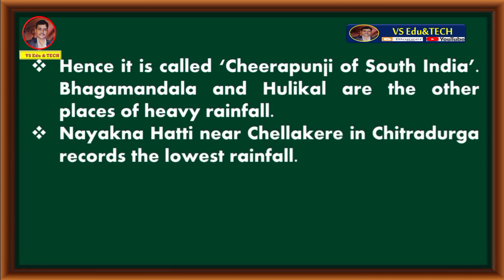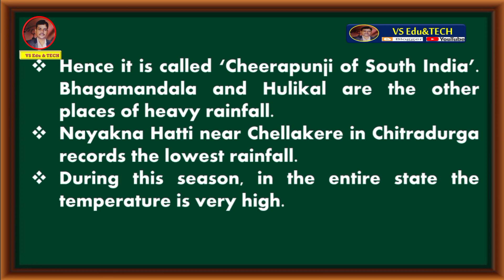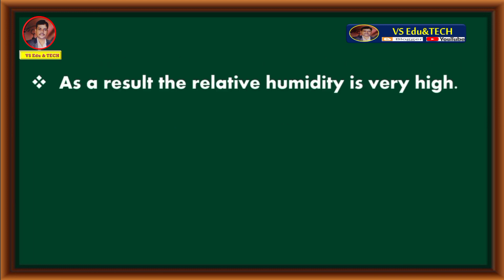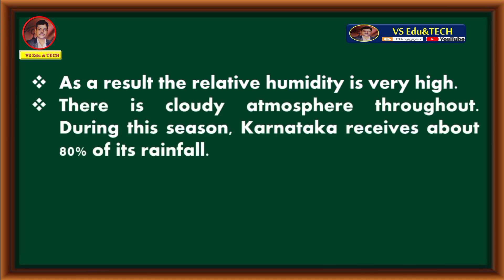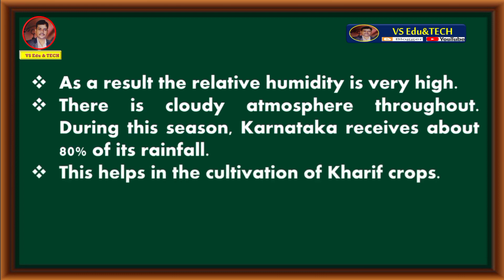Nayakanatti near Chalakere in Chitradurga records the lowest rainfall. During the rainy season, the temperature in the entire state is very high, and as a result, the relative humidity is also very high. There is a cloudy atmosphere throughout. During this season, Karnataka receives about 80% of its rainfall, which helps in the cultivation of Kharif crops.